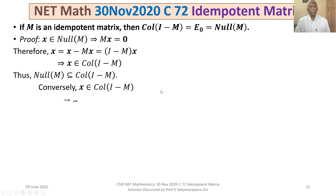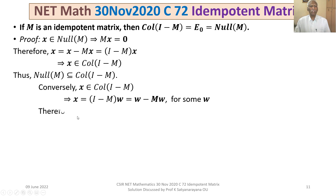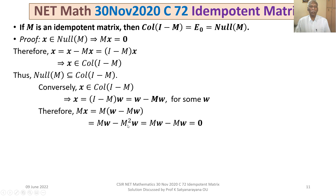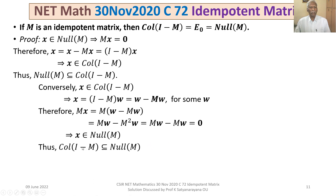Conversely, if x belongs to the column space of (I − M), then x = (I − M)w for some w, i.e., x = w − Mw. Pre-multiplying by M gives Mx = Mw − M²w = Mw − Mw = 0 (since M² = M). So x belongs to null(M). Therefore col(I − M) ⊆ null(M). Combining both inclusions, col(I − M) = null(M) = E₀.